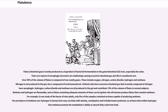Over 99% of the volume of flatus is composed of non-smelly gases. These include oxygen, nitrogen, carbon dioxide, hydrogen, and methane. Nitrogen is not produced in the gut, but is a component of environmental air. Patients who have excessive intestinal gas that is mostly composed of nitrogen have aerophagia. Hydrogen, carbon dioxide, and methane are all produced in the gut and contribute 74% of the volume of flatus in normal subjects.